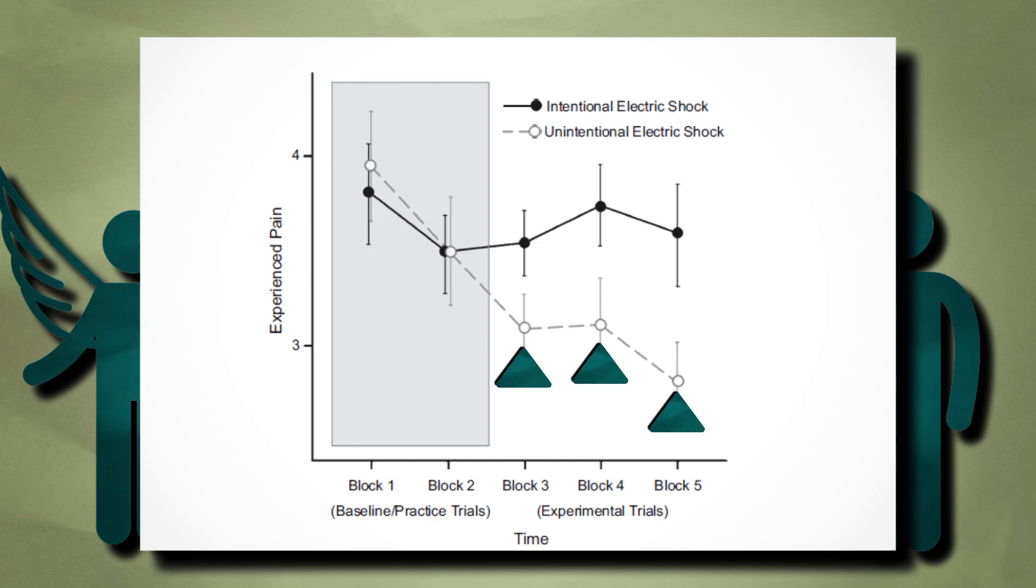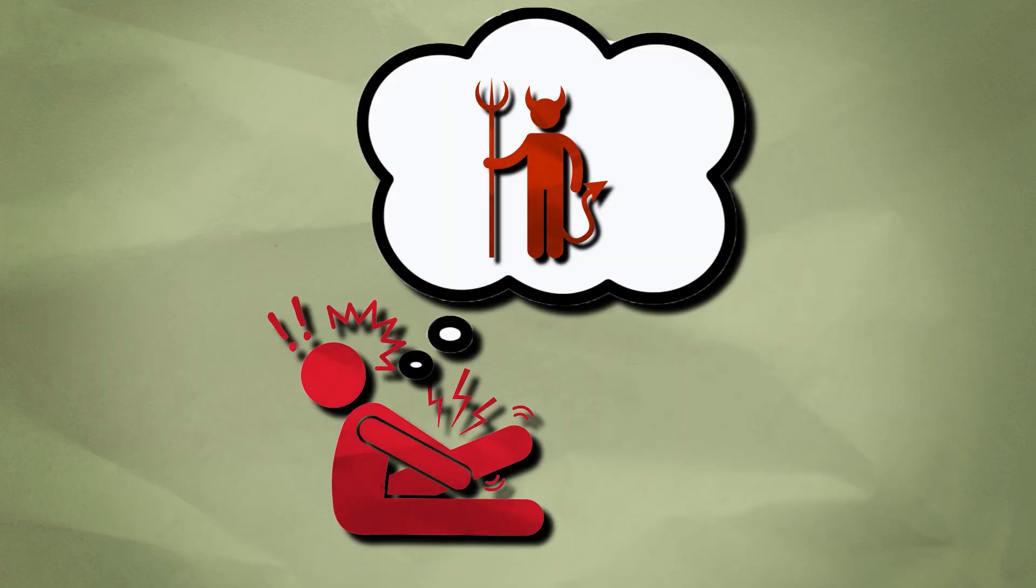In the angel condition, when they thought the study partner was trying to give them the kinder tasks, the participants got used to the shocks much more quickly and reported them as less painful. This information has an incredibly useful application.